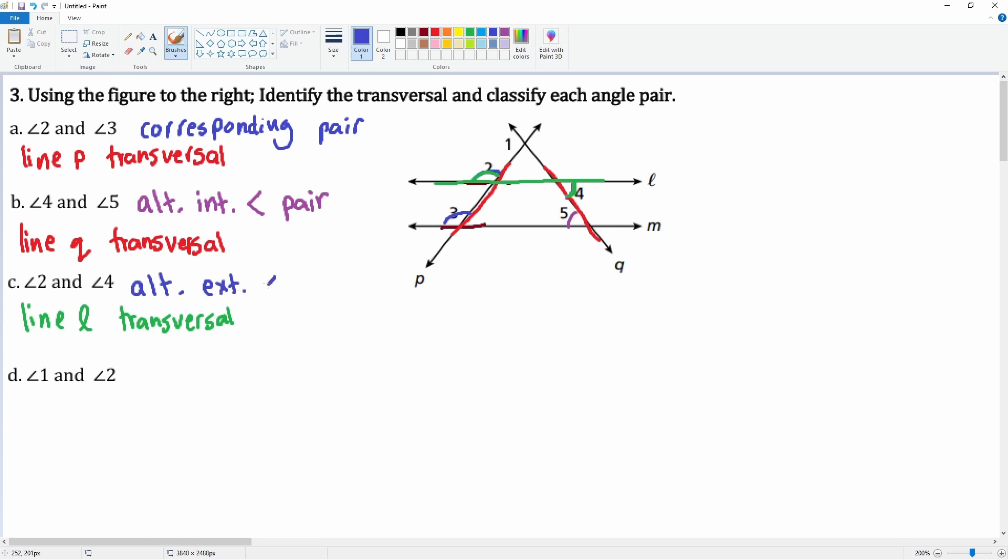Then we can look at one and two. Well, that's possible if this is the transversal, so line p would be the transversal because it goes through both. They look like they're on the inside and consecutive, so we can say these are consecutive interior angle pairs.